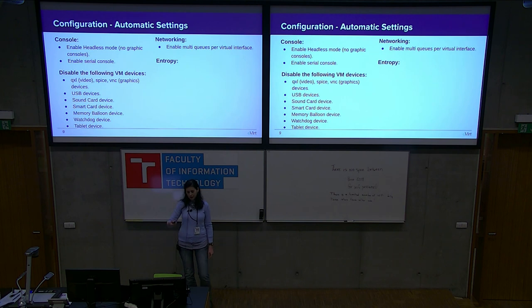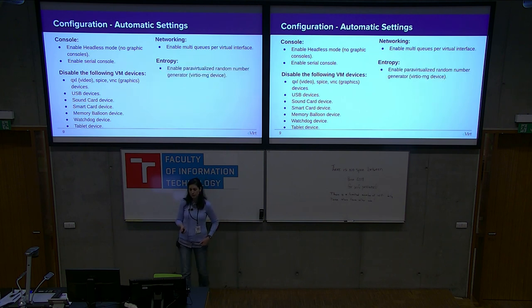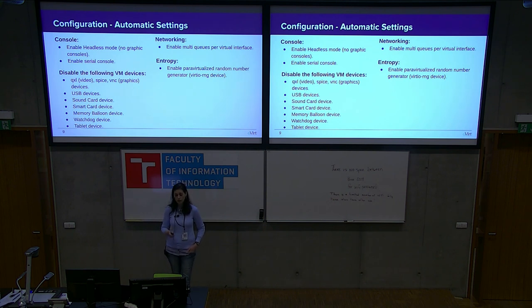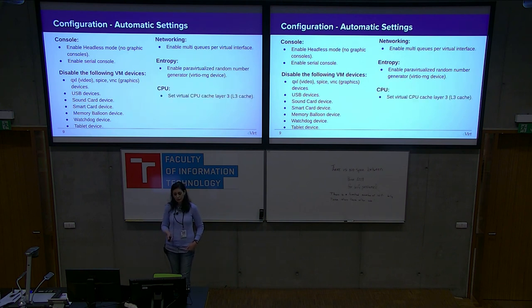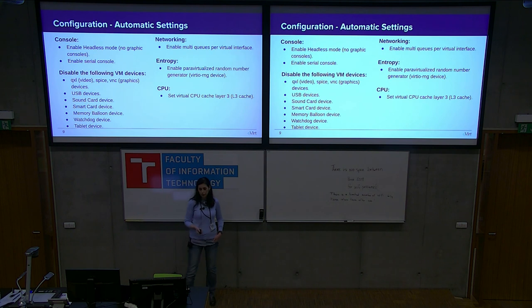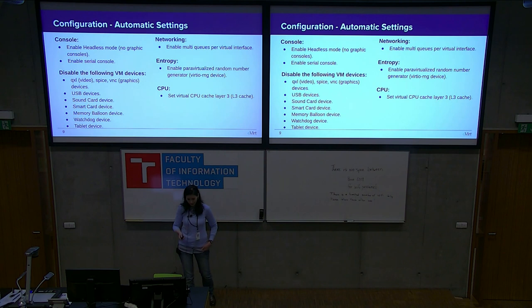We also enable entropy — the random number generator — the same configuration done for the host will be applied to the VM, increasing performance. For CPU, we enable cache layer three: in addition to layers one and two, we add another cache layer, which of course increases performance.